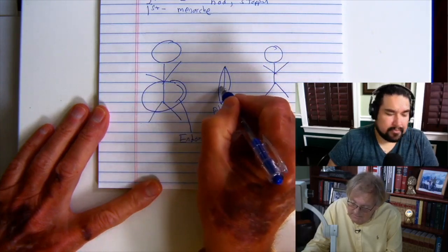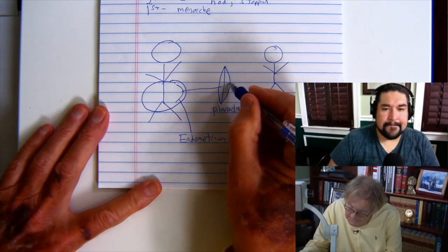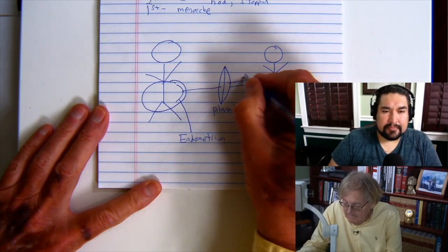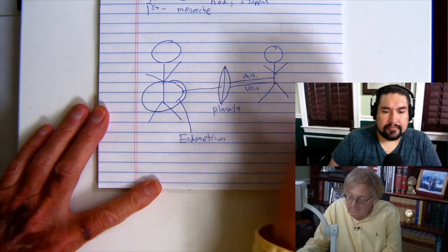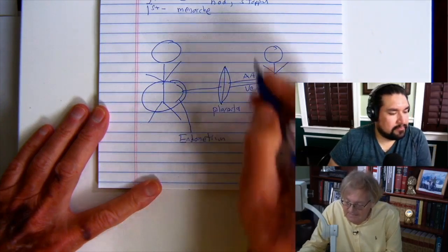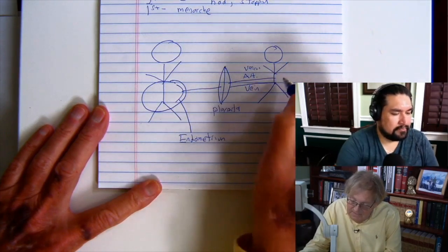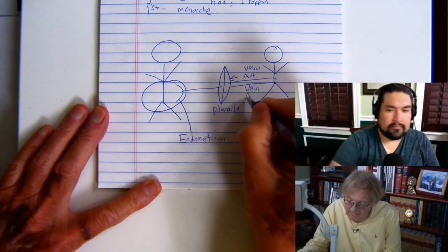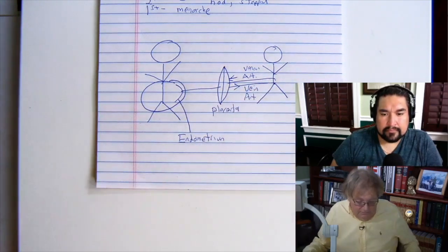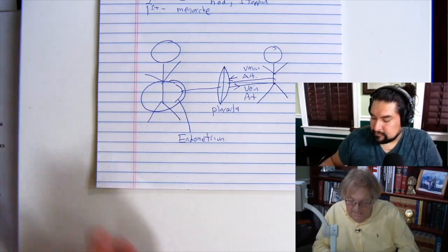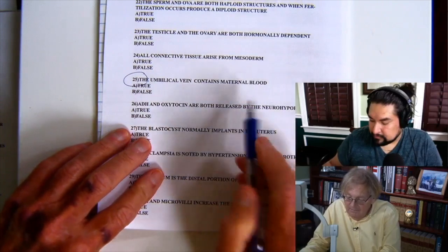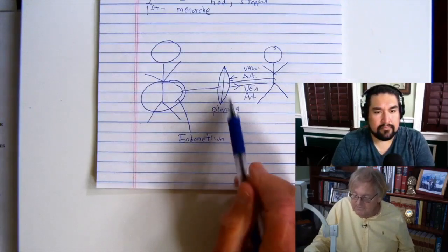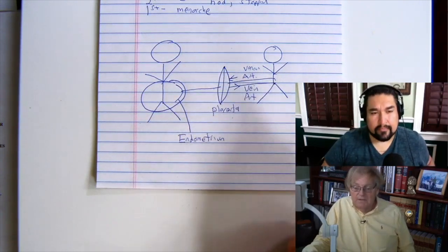The placenta connects via the umbilical vein and umbilical artery into the fetus. The artery carries venous blood from the fetus to the placenta to get oxygenated. The umbilical vein carries arterial blood that was oxygenated by the placenta. So the statement — that the umbilical vein contains maternal blood — is false. The blood in both umbilical vessels is fetal blood and never enters the mother.